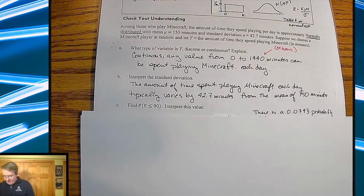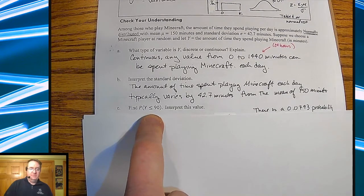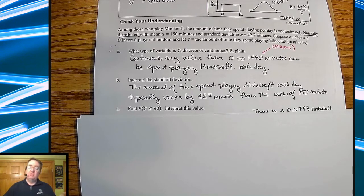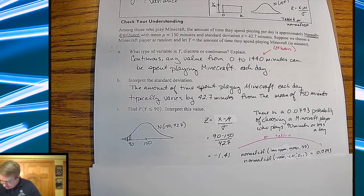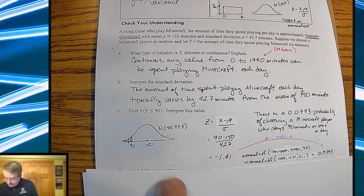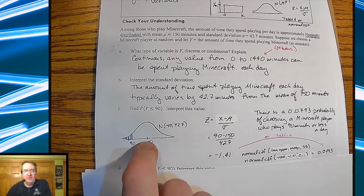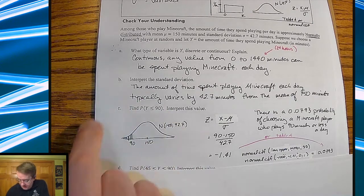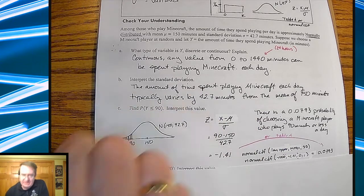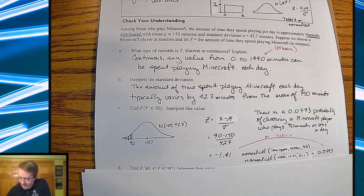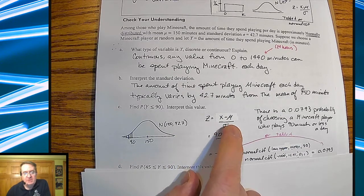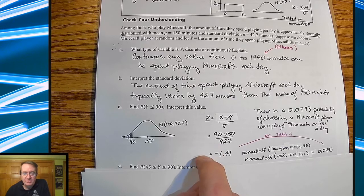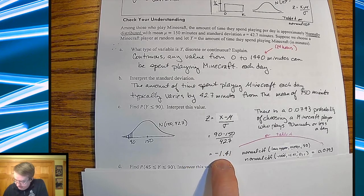So what is the probability of Y being less than or equal to 90? Interpret this value. We're looking for what's the probability that we pick somebody who plays Minecraft for 90 minutes or less. So the first thing we have to do, let's explain this. You make your normal curve. Remember, you have to do that. Draw it out because that's going to help organize it. Write out your Z-score: X minus mu over sigma. Plug in your numbers. This would be 90 minus 150 divided by 42.7, and we get a negative 1.41.